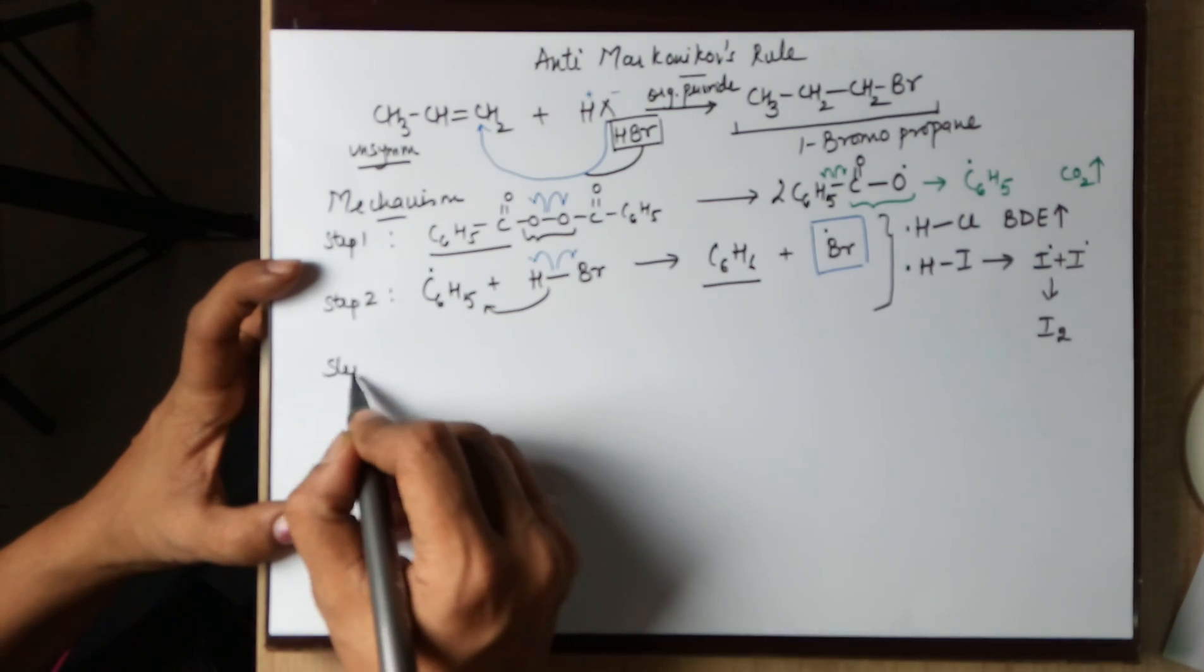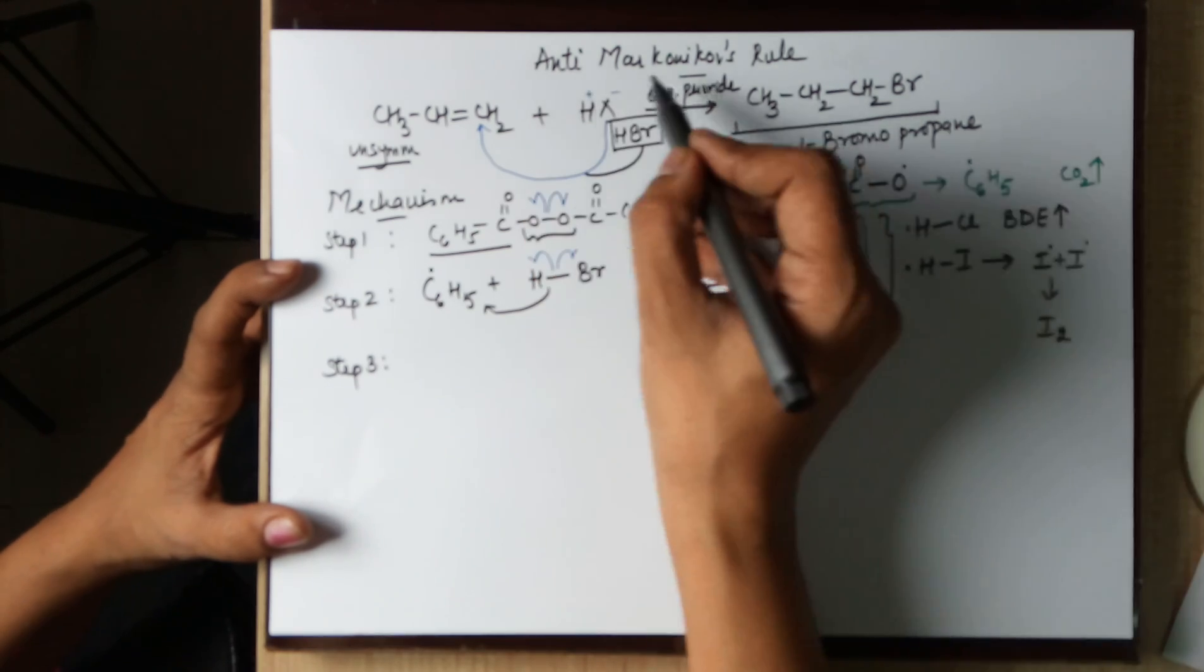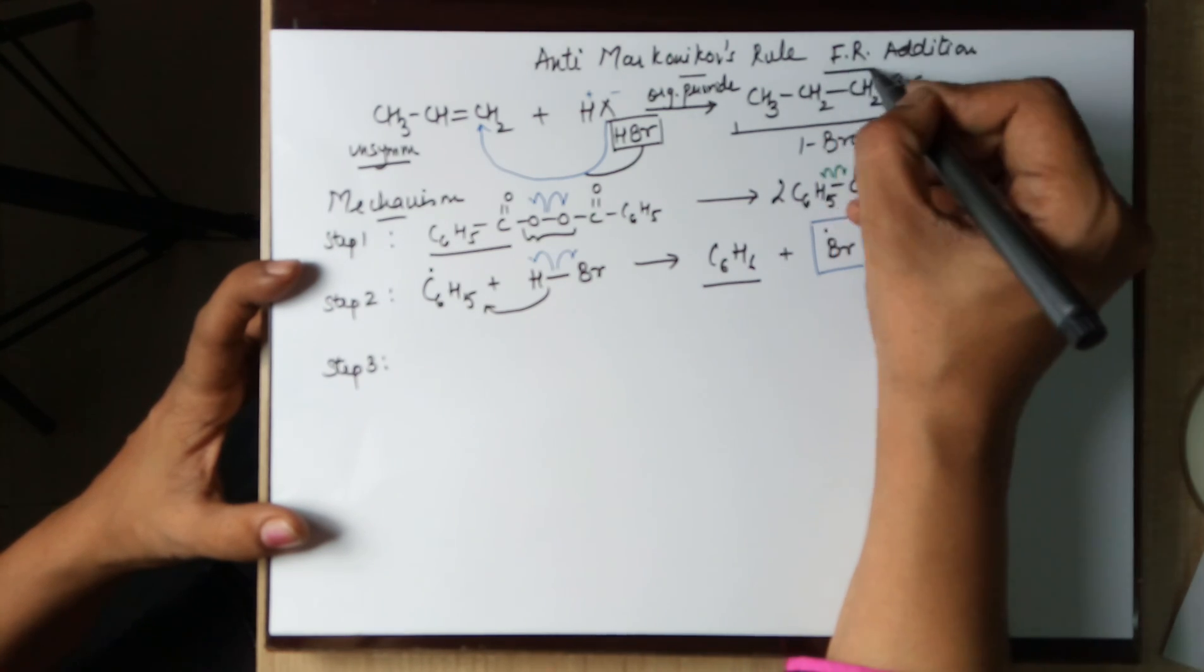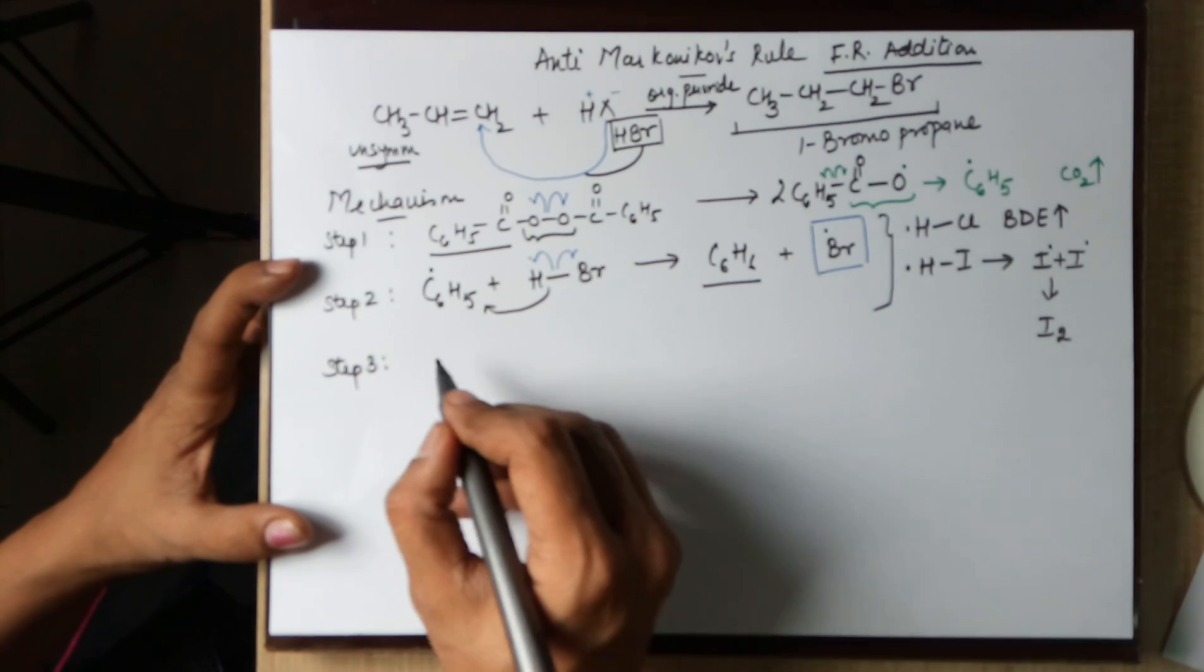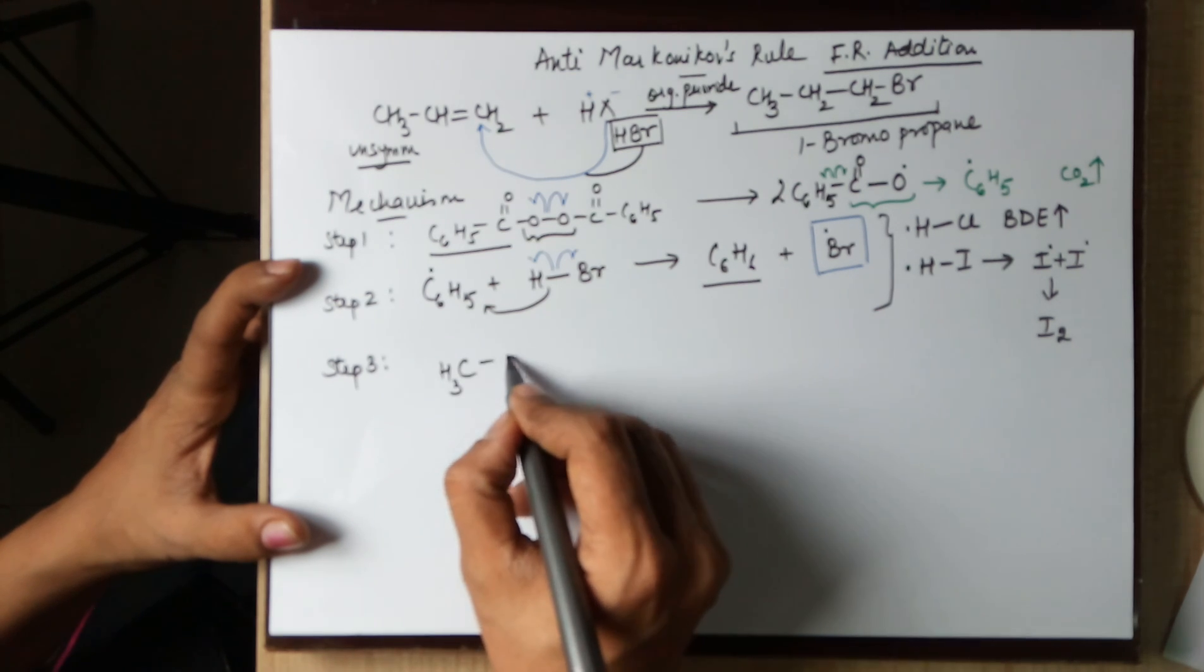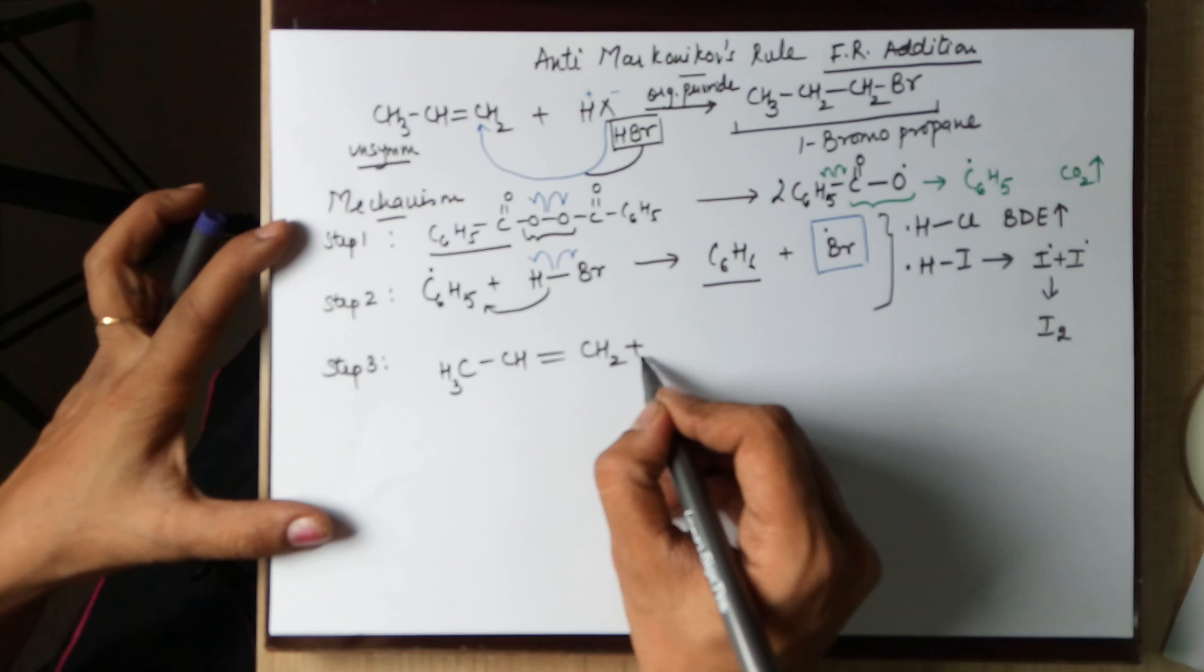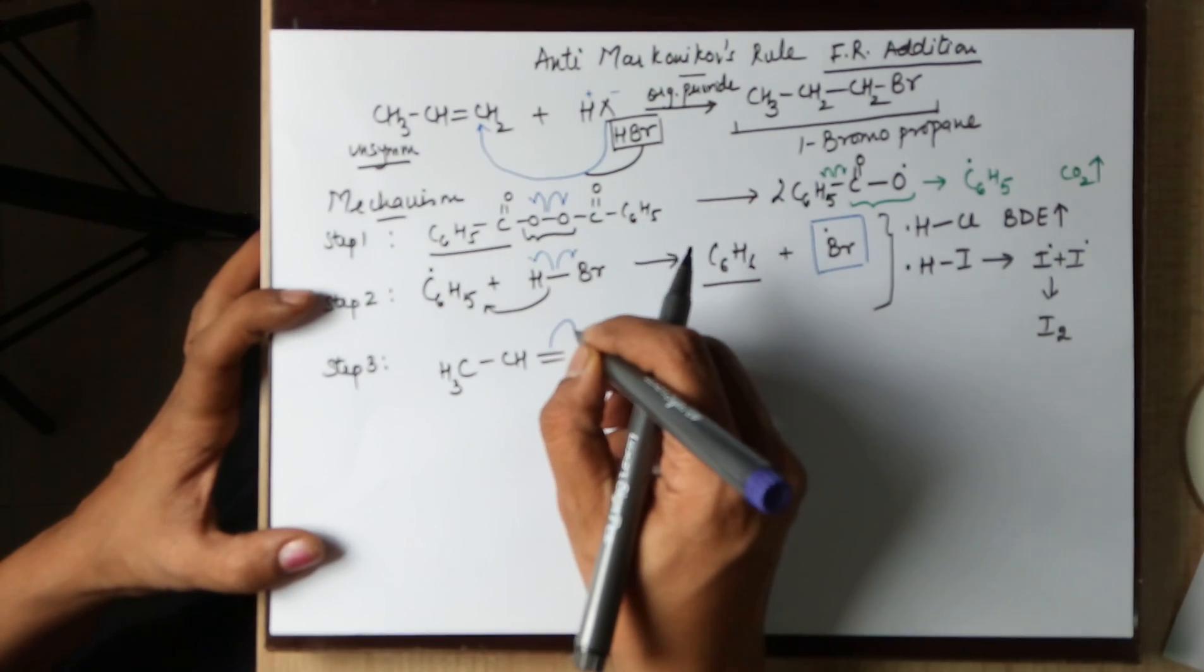Moving on to step 3 where you are going to use the bromide free radical. Anti-Markovnikov's rule is a free radical addition across an unsymmetrical alkene. This bromide now has to attack onto your alkene. The alkene that we were using was CH3, CH, double bond, a CH2. This particular bond, if this has to combine with a Br free radical, you need to cleave this bond homolytically.